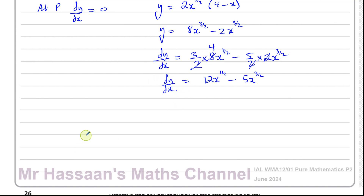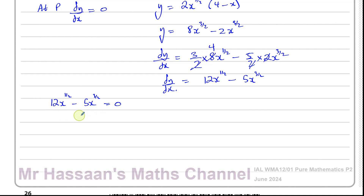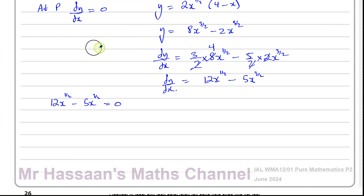We want to find when dy/dx equals 0, so: 12x to the power of a half minus 5x to the power of 3 over 2 equals 0. The most complete approach is to factorize by taking out the highest common factor of these two terms. When you have fractional powers, the highest common factor is always the term with the lowest power — for example, x cubed minus x to the fifth has HCF of x cubed.